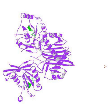RAN exists in the cell in two nucleotide-bound forms: GDP-bound and GTP-bound. RAN-GDP is converted into RAN-GTP through the action of RCC1, the nucleotide exchange factor for RAN. RCC1 is also known as RAN-GEF.